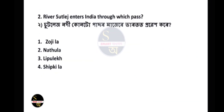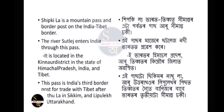Next question: The river Sutlej enters India through which pass? The answer is Shipkila. Shipkila is a mountain pass and border post on the India-Tibet border. It is a high-altitude mountain pass on the India-Tibet Himalayan border.